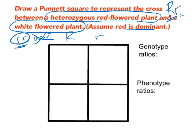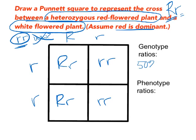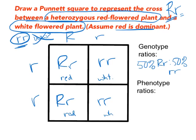Setup is the same: one parent goes on top — big R, little r — and the white-flowered plant on the side — little r, little r. Filling in the squares gives us big R little r, little r little r, big R little r, and little r little r. Our genotype ratio is 50% heterozygous big R little r and 50% homozygous recessive little r little r. For phenotype: the squares with big R little r have the dominant red gene so they look red, and the little r little r squares are white. So the phenotype ratio is 50% red and 50% white.